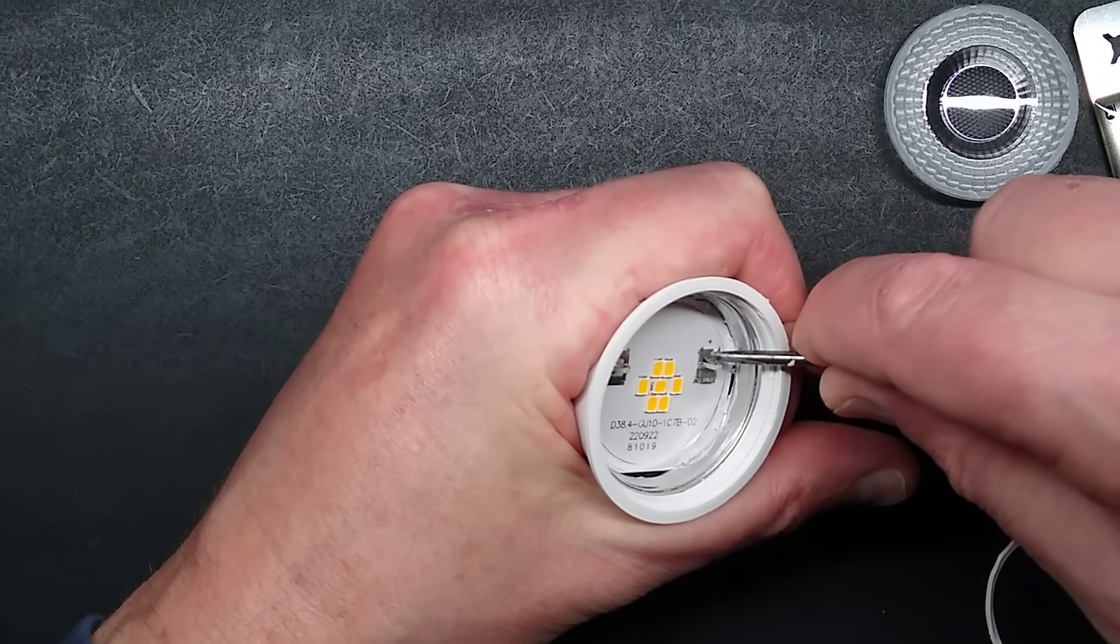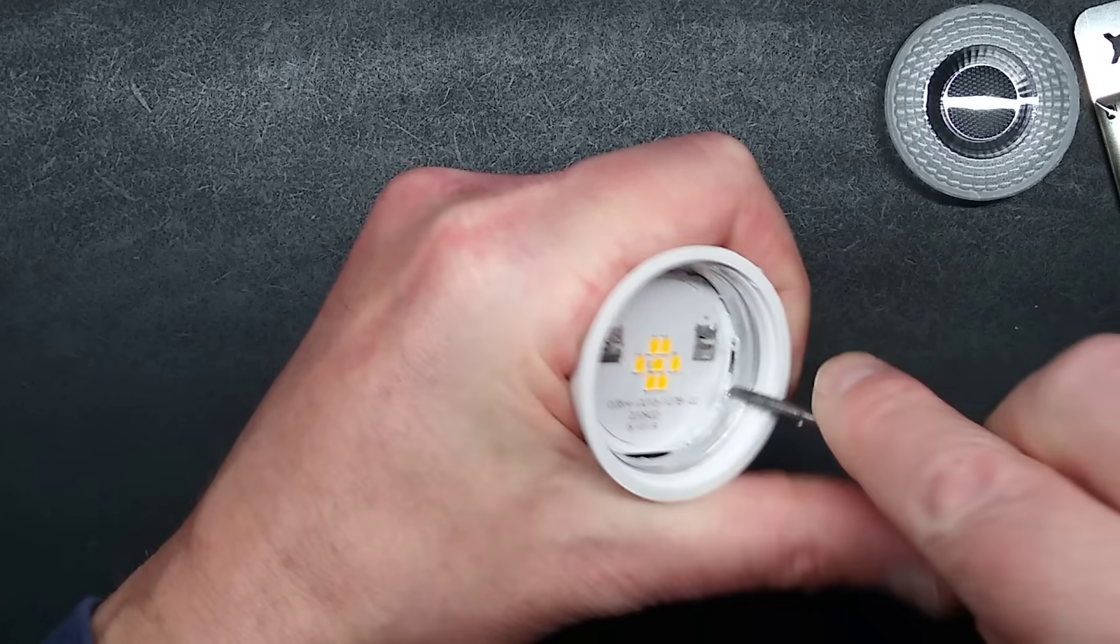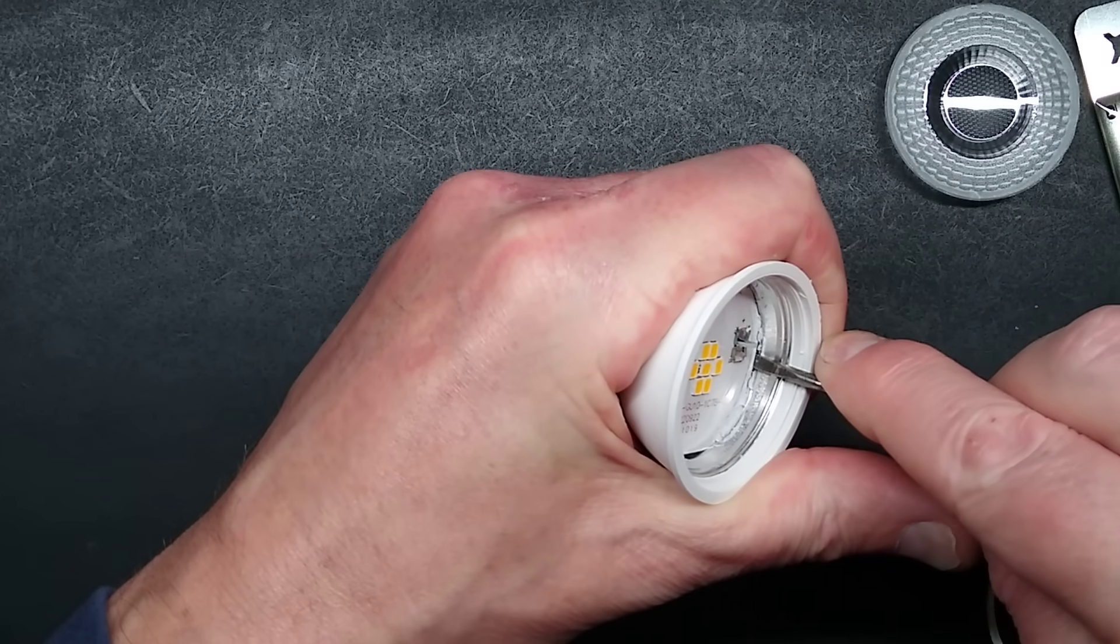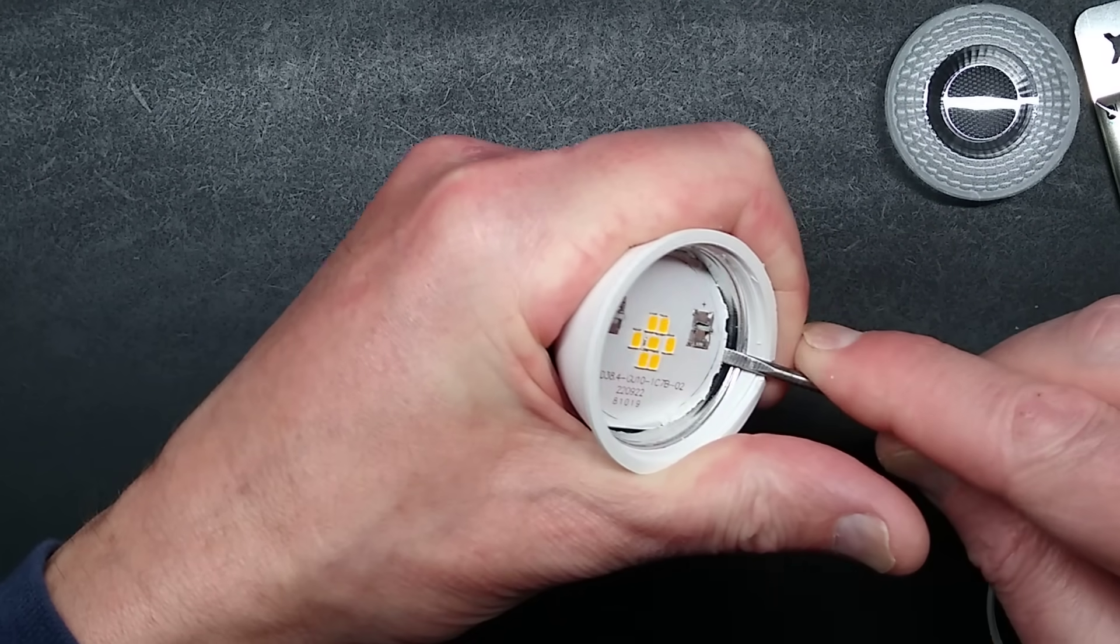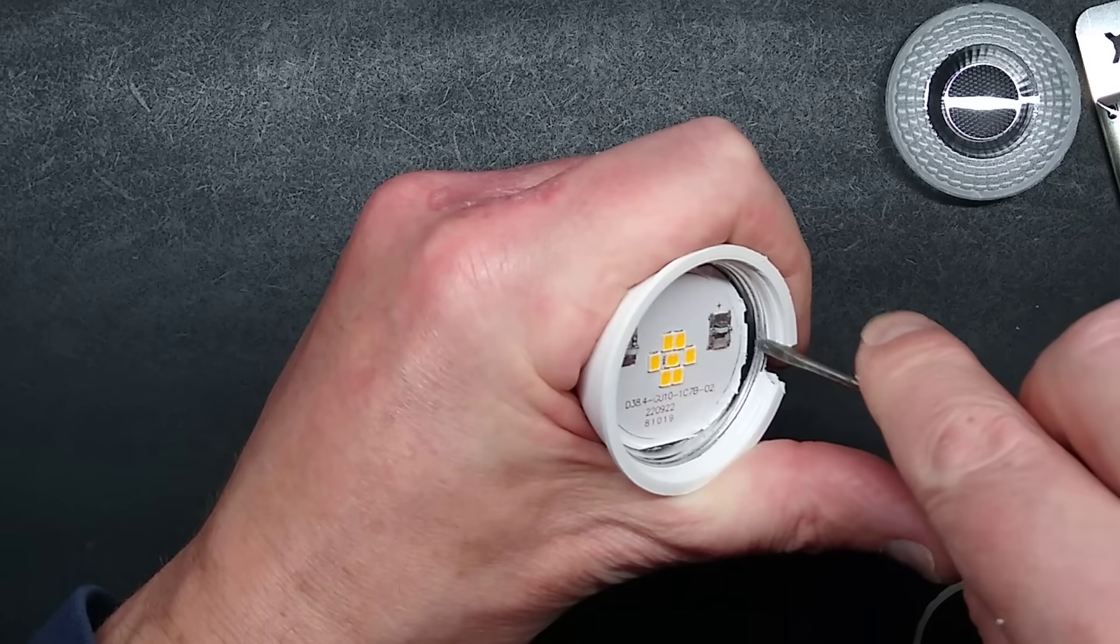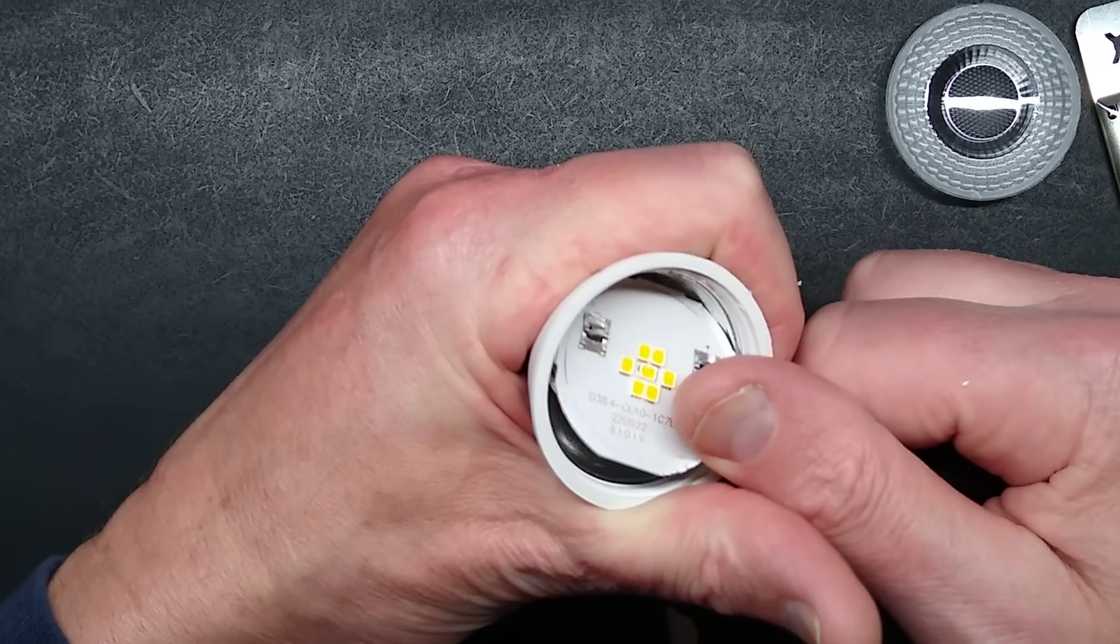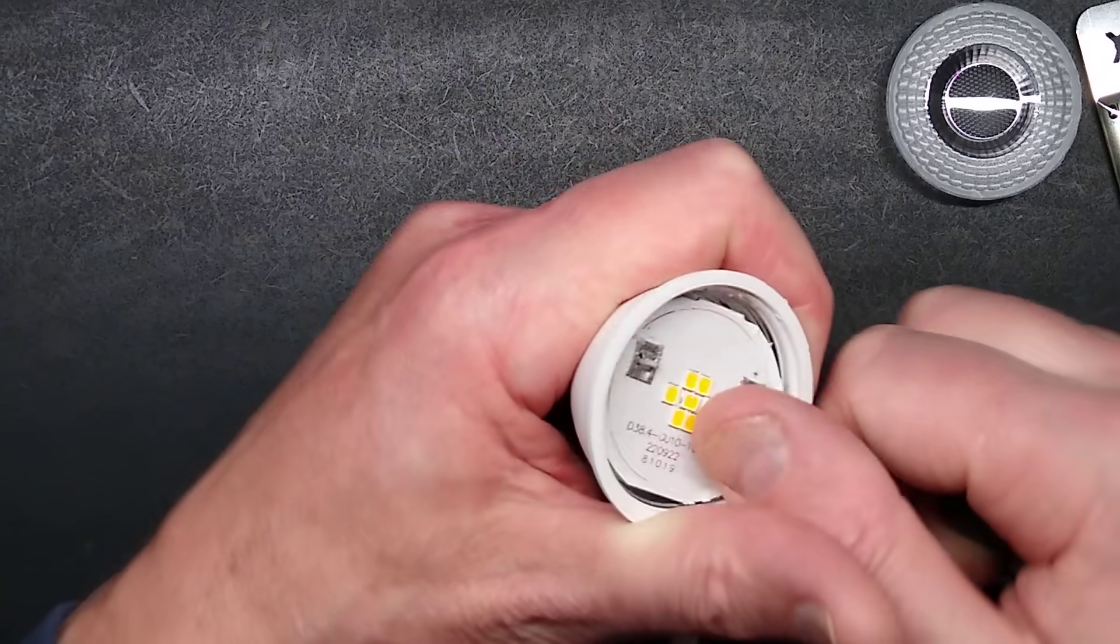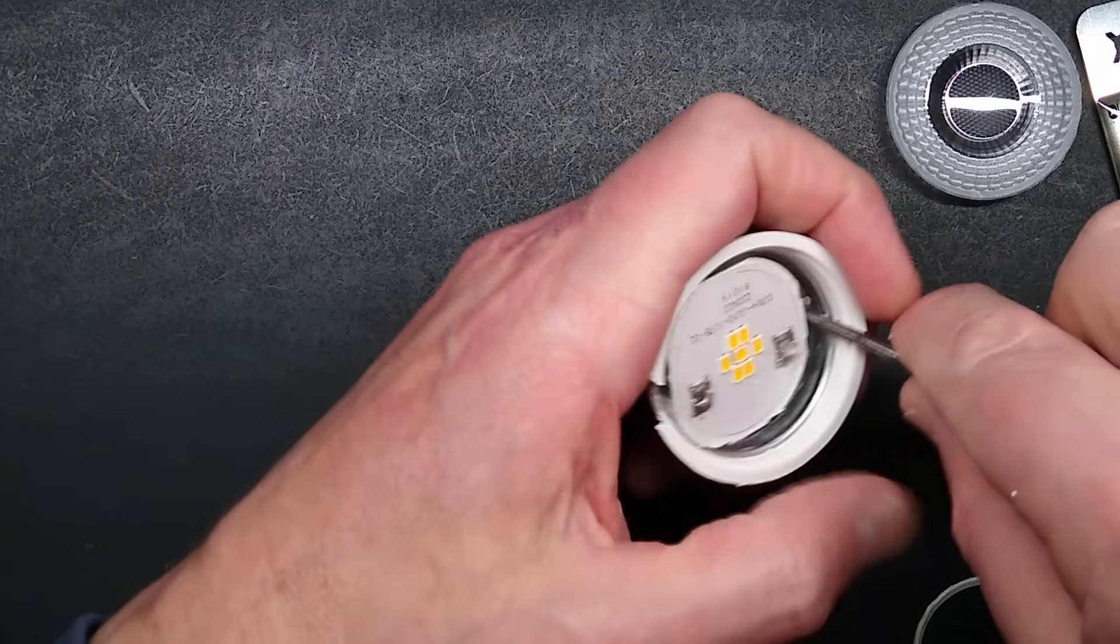Those electronic halogen transformers put out very high frequency pulses and those pulses are often quite high voltage.